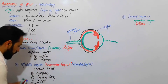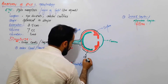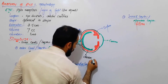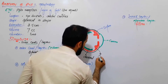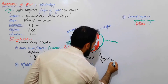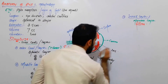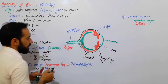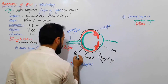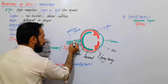The middle layer is composed of three parts: the choroid, the ciliary body, and the iris. And here is our retina, which belongs to the inner nervous layer. This is our ophthalmic nerve.